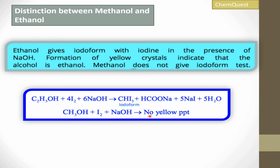If you have methanol and treat it with iodine and NaOH, there will be no formation of yellow precipitate. So the clear indication is: if you get a yellow precipitate, then it is ethanol; if there is no yellow precipitate, then it is methanol. Ethanol will give the yellow precipitate and methanol will not.